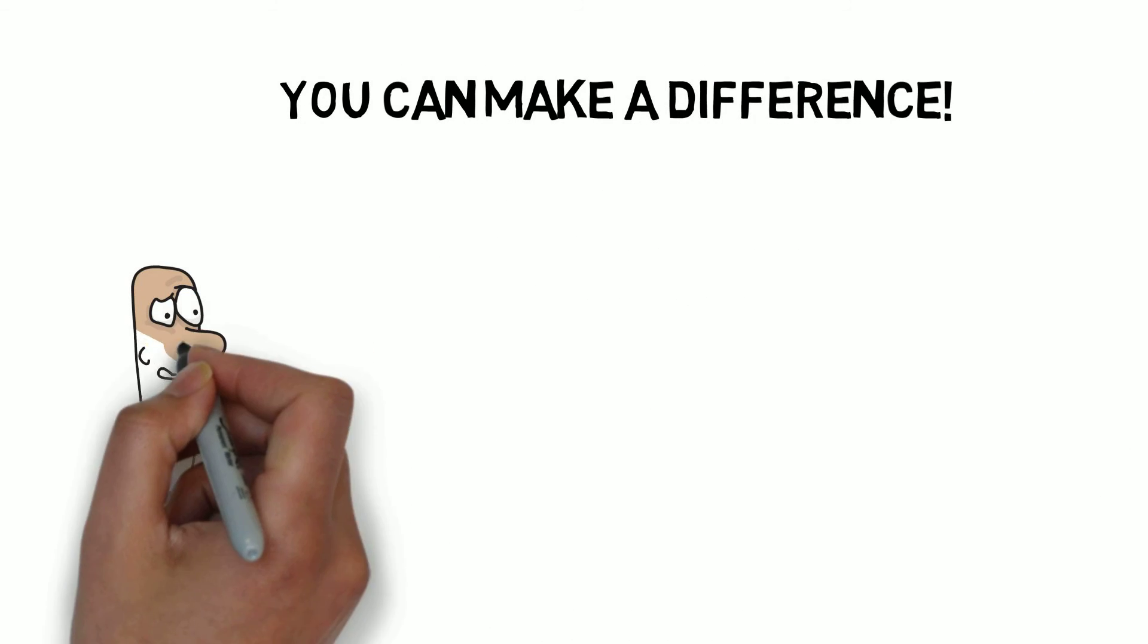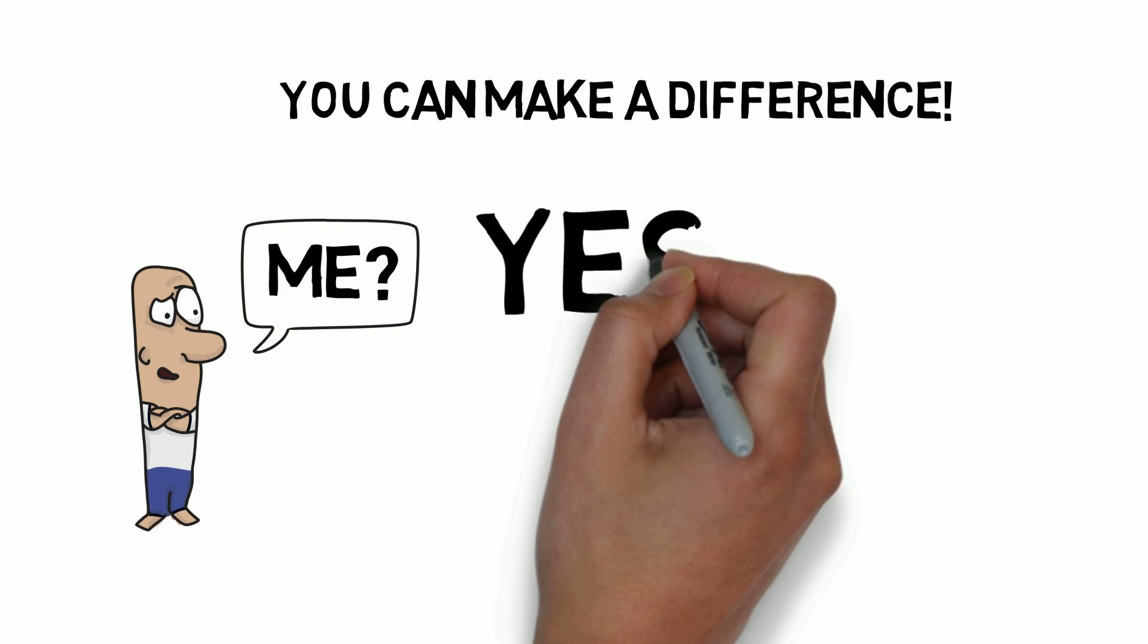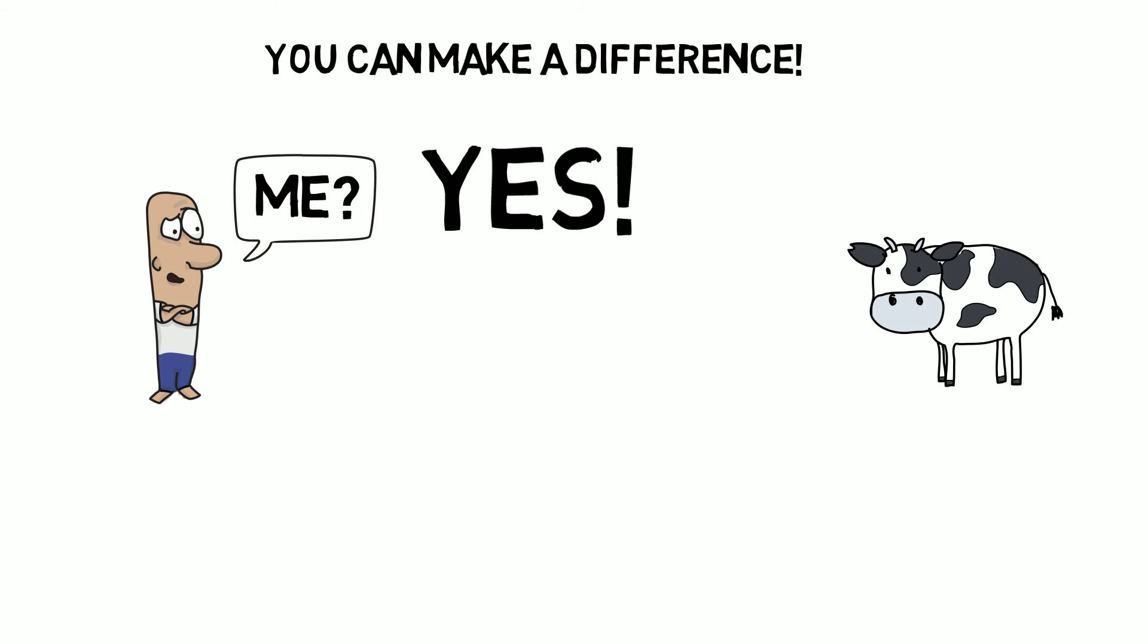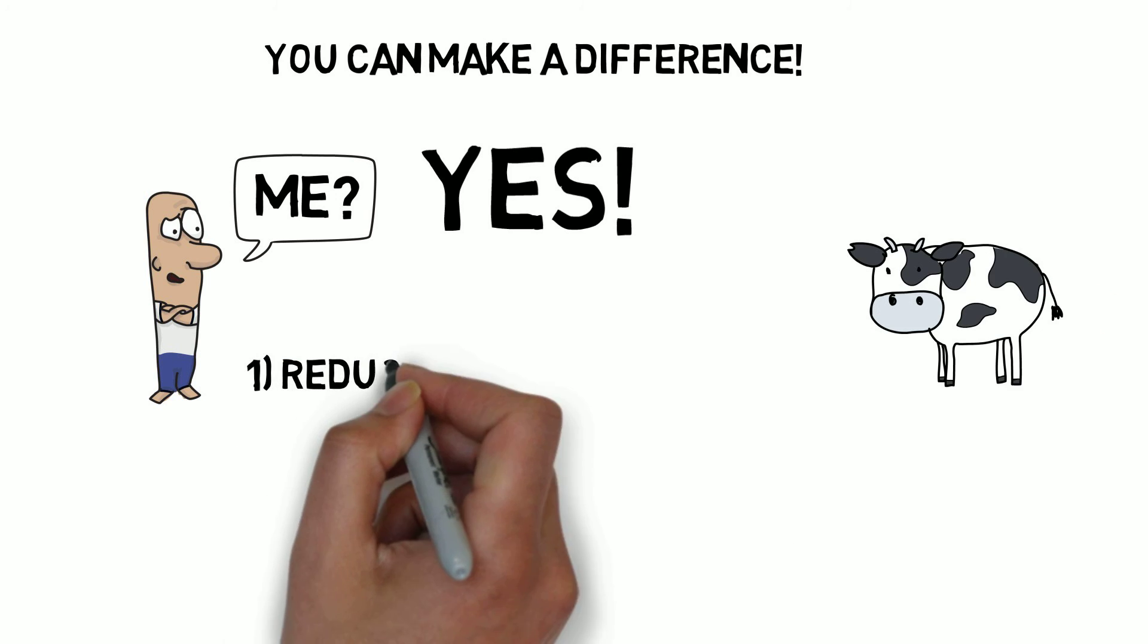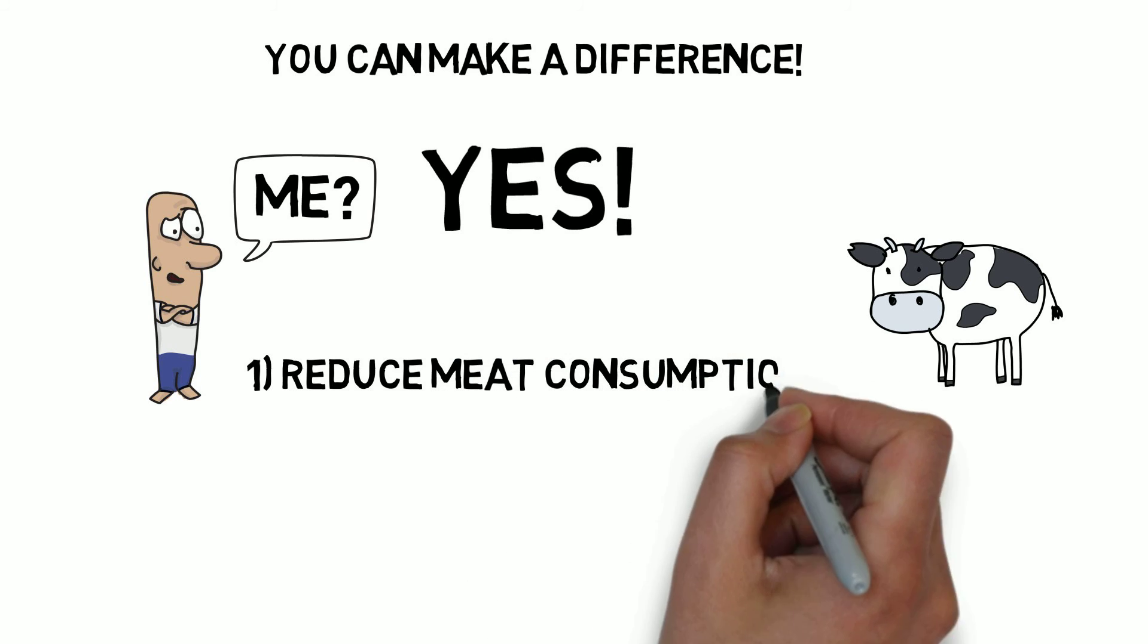I will ask you to do three very simple things. First, you need to know that animal agriculture is a big contributor to climate change. So reducing your meat consumption is the first and easiest thing you can do.